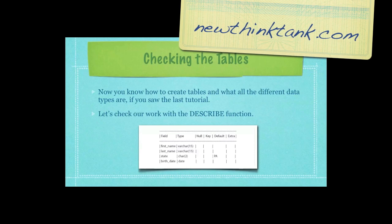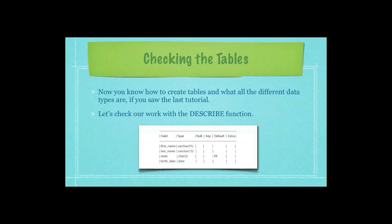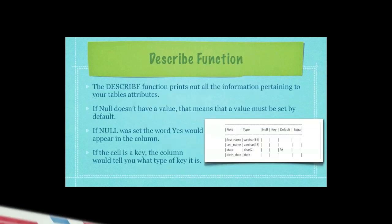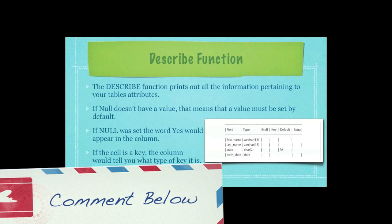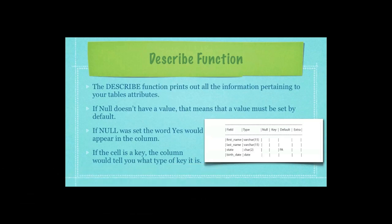If you saw the last tutorial you now know how to create tables and what all the different data types are. So let's check our work with the describe function. If you type in describe followed by your database name, this is what you would see in your terminal. The describe function prints out all of the information pertaining to your table's attributes. As you can see here, if null doesn't have a value, that means that a value must be set by default. If null was set, the word yes would appear in this column.